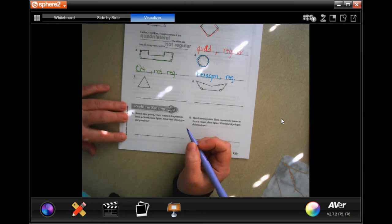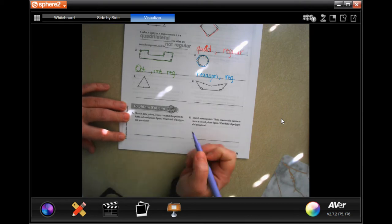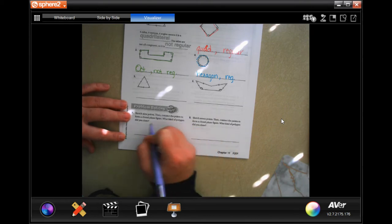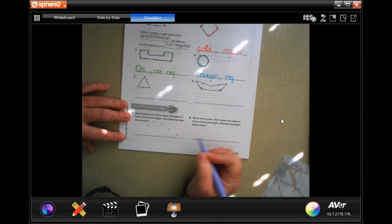Do number seven. It says sketch nine points, then connect the points to form a plane figure. What kind of polygon did you draw? Well, one, two, three, four, five, six, seven, eight, nine. So we're going to connect them.